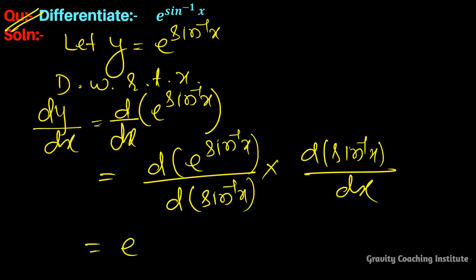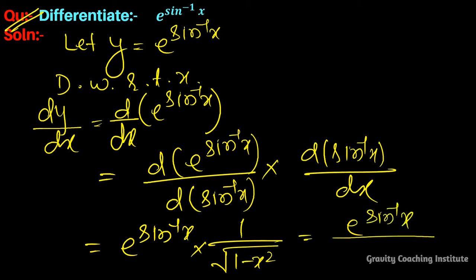Using the formula for e to the power x, we get e to the power sin inverse x, and the derivative of sin inverse x is 1 upon root under 1 minus x square. So the answer is e to the power sin inverse x upon root under 1 minus x square.